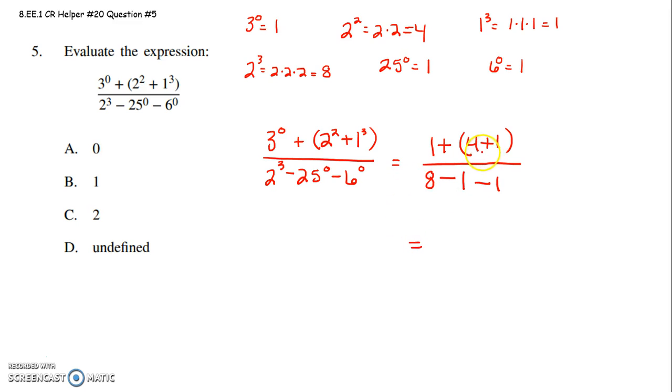Alrighty. So now I have to follow my order of operations. I'm going to work within parentheses first. I have to simplify within parentheses first. So this becomes 1 plus 4 plus 1 is 5. Once I have a single value within parentheses, I don't have to write those parentheses anymore.